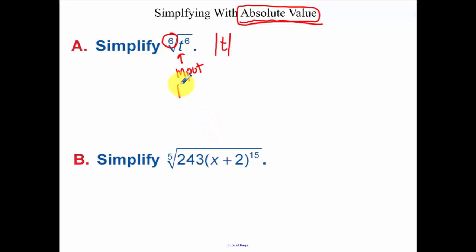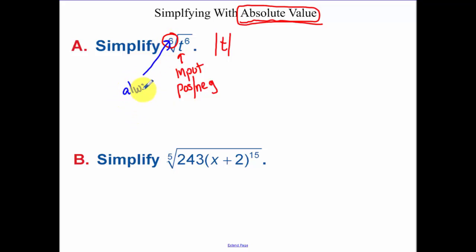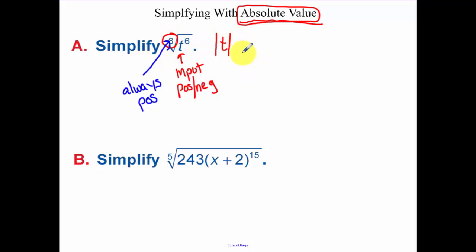Again, my input can be positive or negative, but because of that 6th root, the result is always going to be a positive number. So if I plug in a negative number, how do I simplify that to always be positive? Absolute value.